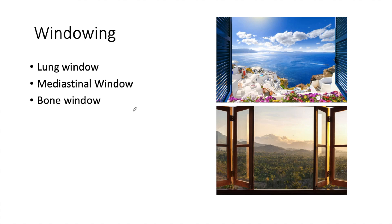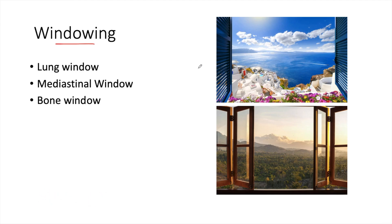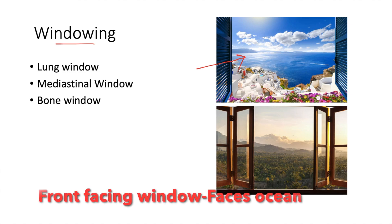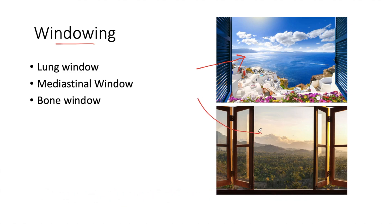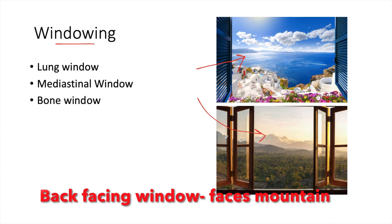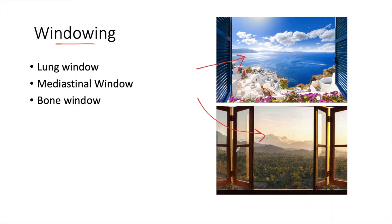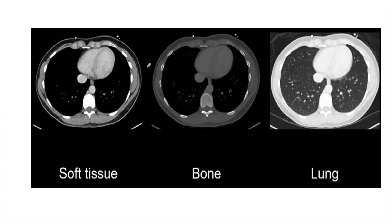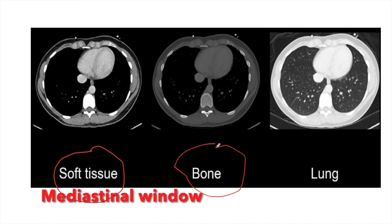Welcome to Radio Clinics. Before understanding the CT scan of the chest, we should know the concept of window. For analogy, imagine yourself in a hotel with a front-facing window overlooking the ocean and a back-facing window facing the mountain. It is not possible to see the ocean from the back-facing window and vice versa — the window shows only the things in its area. Similarly, in CT chest, we have basically three windows: soft tissue or mediastinal window, bone window, and lung window.